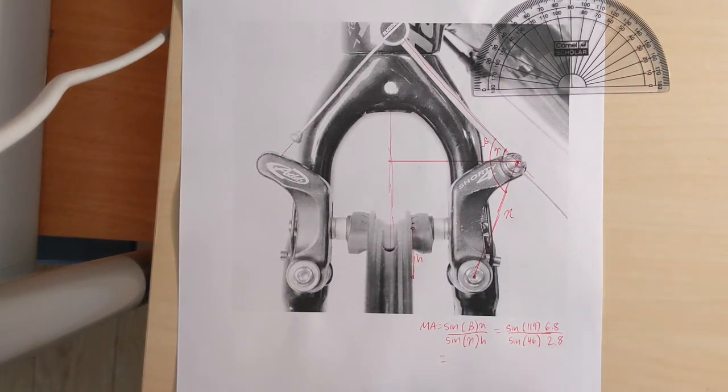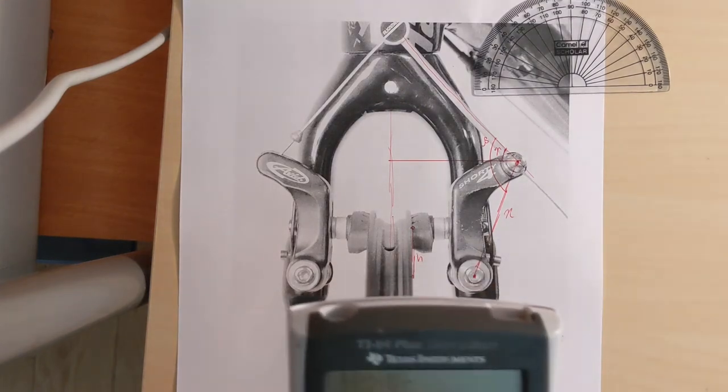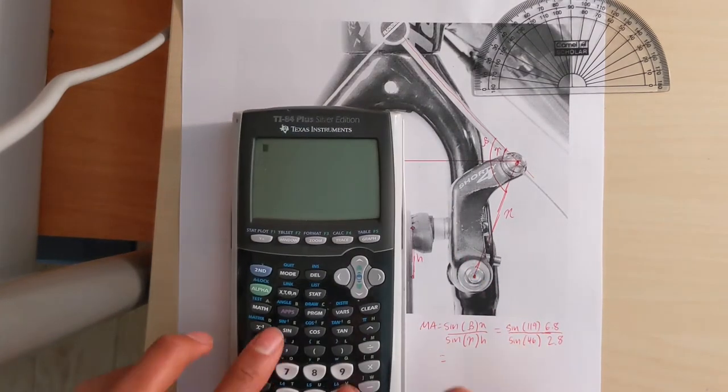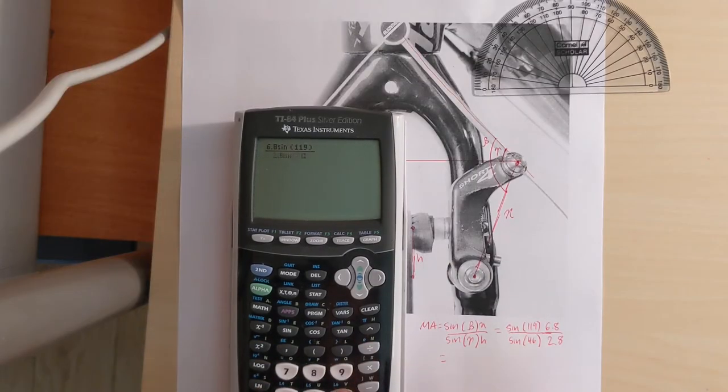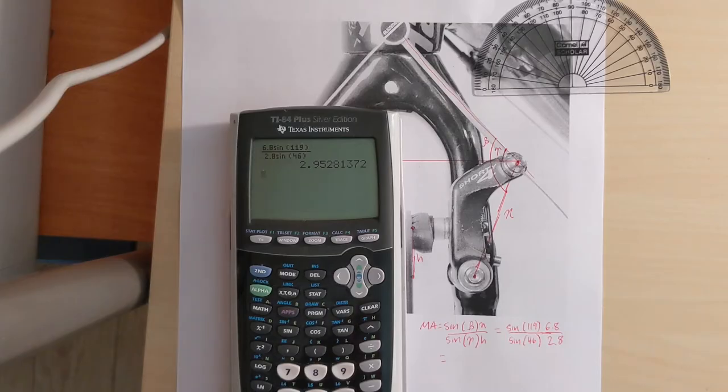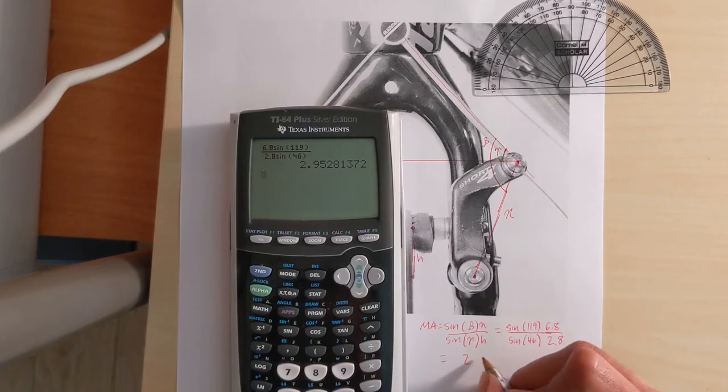Now let's throw these numbers into the calculator and see what we get. So we get 2.95, which is a higher mechanical advantage than that given by the wide profile cantilevers, which is 1.92.